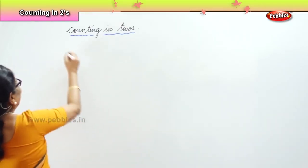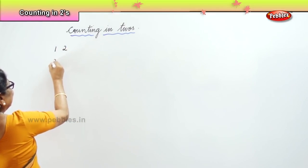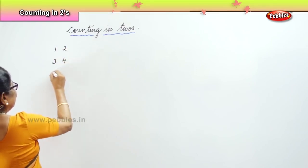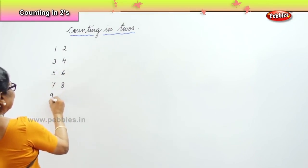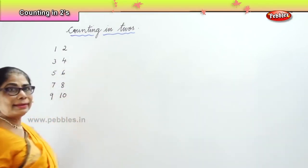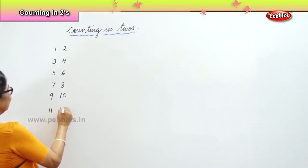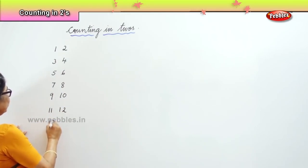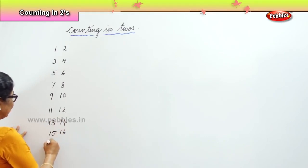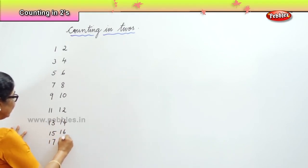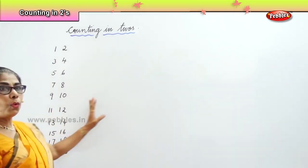Just watch. I'll write here: one and two, three, four, five, six, seven, eight, nine, ten. And you go on. Eleven, twelve, thirteen, fourteen, fifteen, sixteen, seventeen, eighteen, nineteen, twenty.